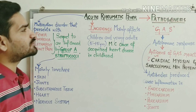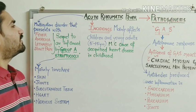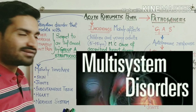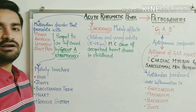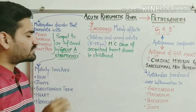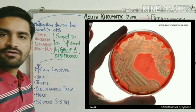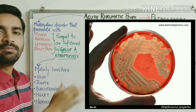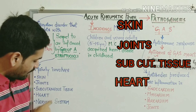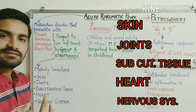Acute rheumatic fever is a multi-system disorder — it is not limited to a single system. It presents with fever, anorexia, lethargy, and joint pain, occurring as a sequel to an infection caused by Group A Streptococci. The systems involved in this disease are skin, joints, subcutaneous tissue, heart, and nervous system. Remember these five systems.